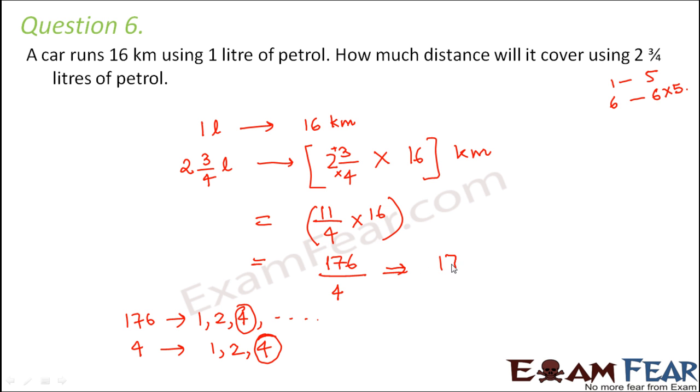So we can divide the numerator and denominator by 4. So 176 by 4 is what? In fact basically that is what we could have done here also. So this would be 44. So 44 into 4 is 176. So 44 kilometer is the distance that would be traveled using 2 3/4 liters of petrol.